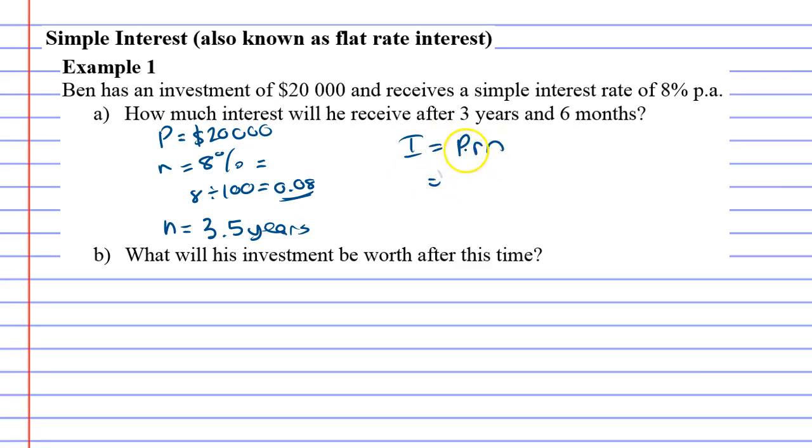0.08 times N, which is 3.5, and that comes out to $5,600. So if he invests $20,000, after three years and six months he should make $5,600 in interest. That sounds like really good interest to earn.